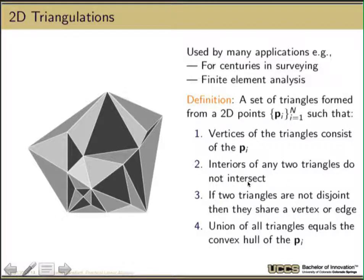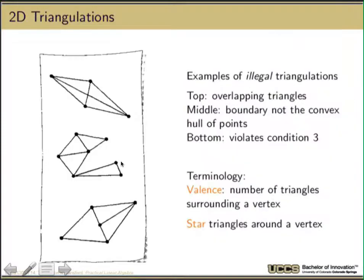The set of triangles that are formed by a set of 2D points, such that we're going to give them the properties, the vertices of the triangles consist of the points PI. Interiors of any two triangles do not intersect. So none of these triangles actually overlap each other. If two triangles are not disjoint, then they share a vertex or an edge. If I have two triangles and they're not disjoint, disjoint would mean they have nothing in common. If they have anything in common, then they're going to share an edge. Triangles don't meet at just a point.